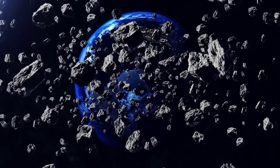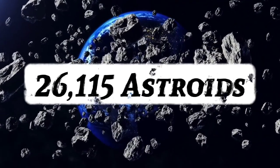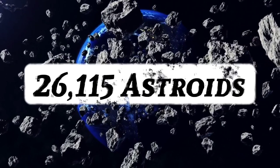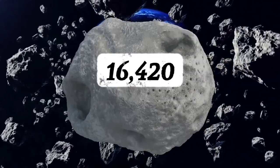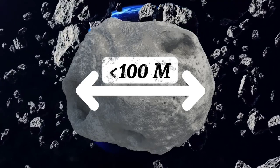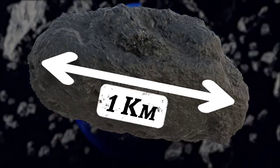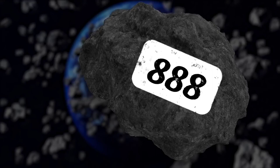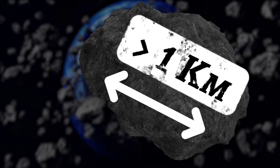NASA has compiled a list of 26,115 asteroids that will come close to Earth. Among them, 16,420 are smaller than 100 meters, 8,807 are about 1 kilometer in size, and 888 are even larger than 1 kilometer.